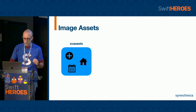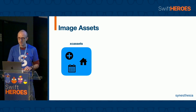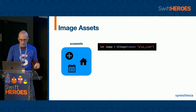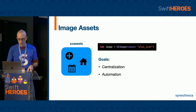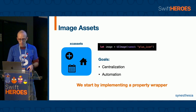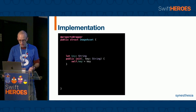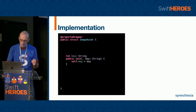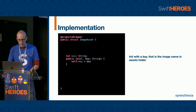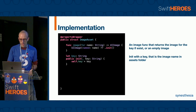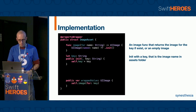Another scenario in which it may be useful to implement a property wrapper is asset management. Retrieving an image from Xcode assets is not so difficult, but what we want to achieve is a centralized and automated approach. In this case, we have to add an init method that accepts a key — the name of the image in Xcode assets — an image function that returns the image for the key if it exists or an empty image, and the wrappedValue that returns the result of the image function.